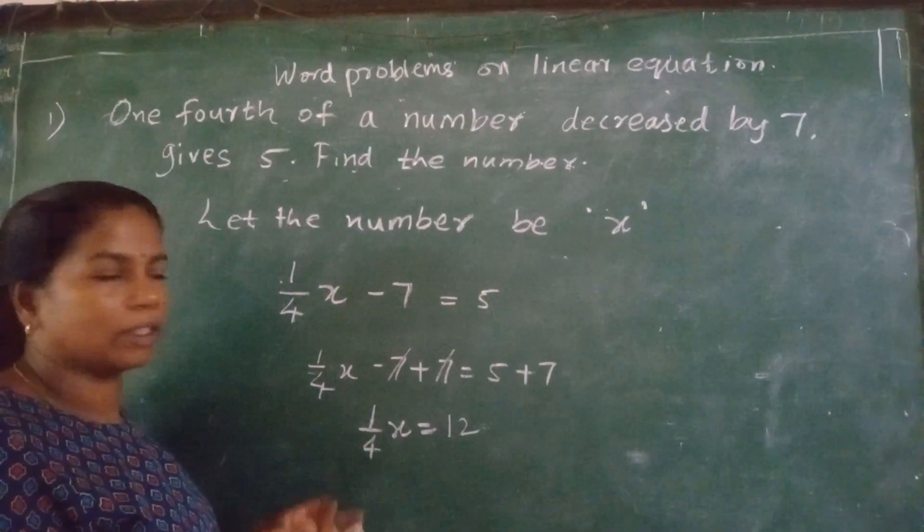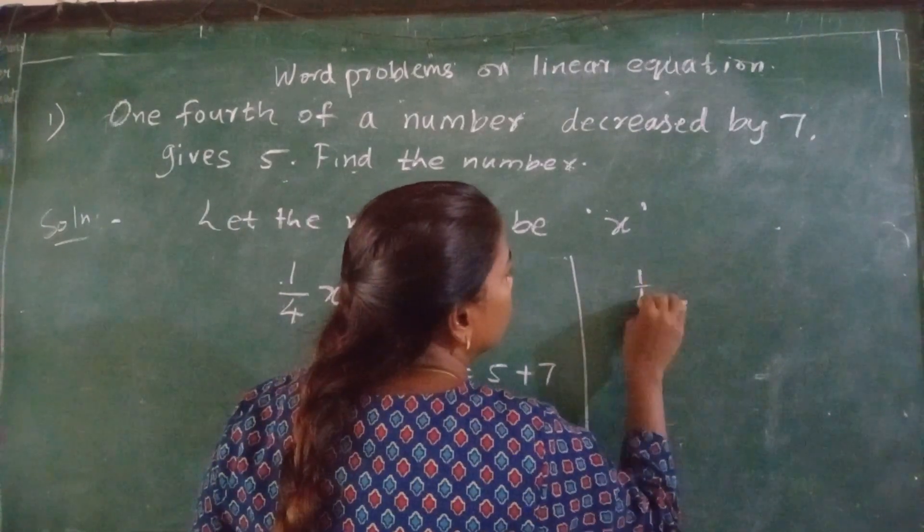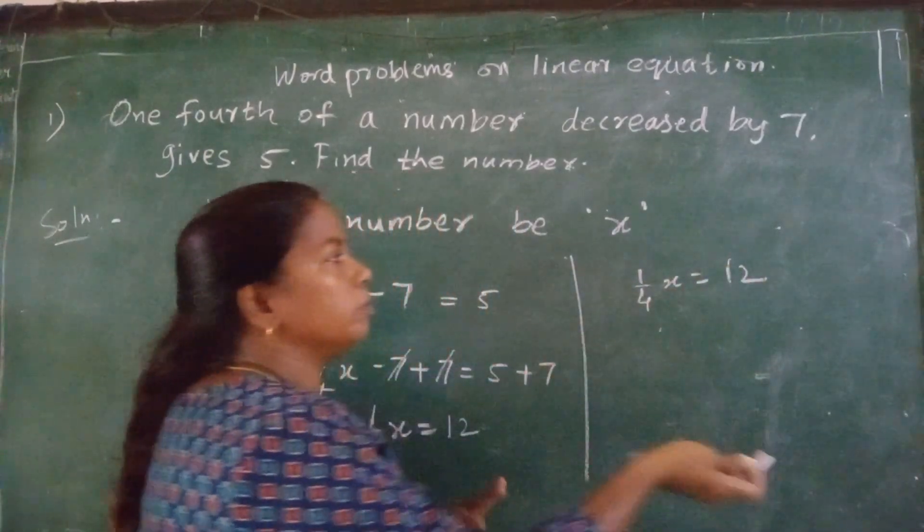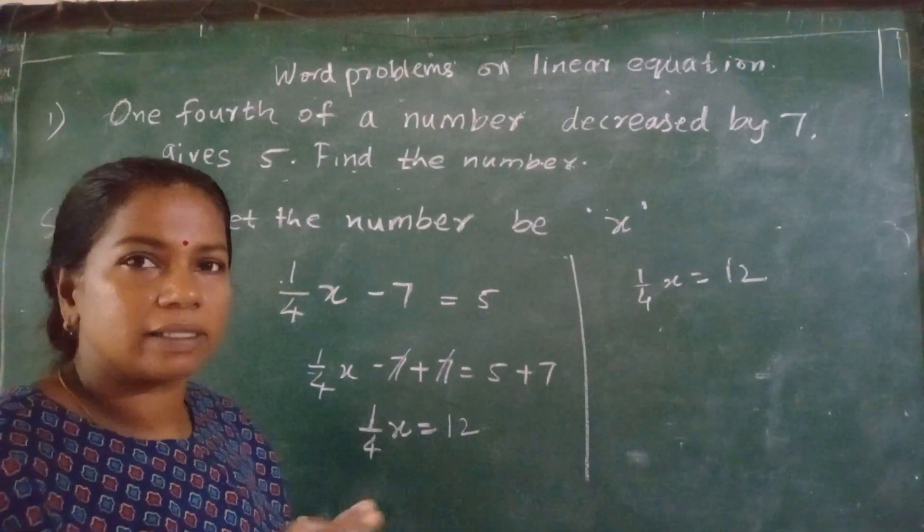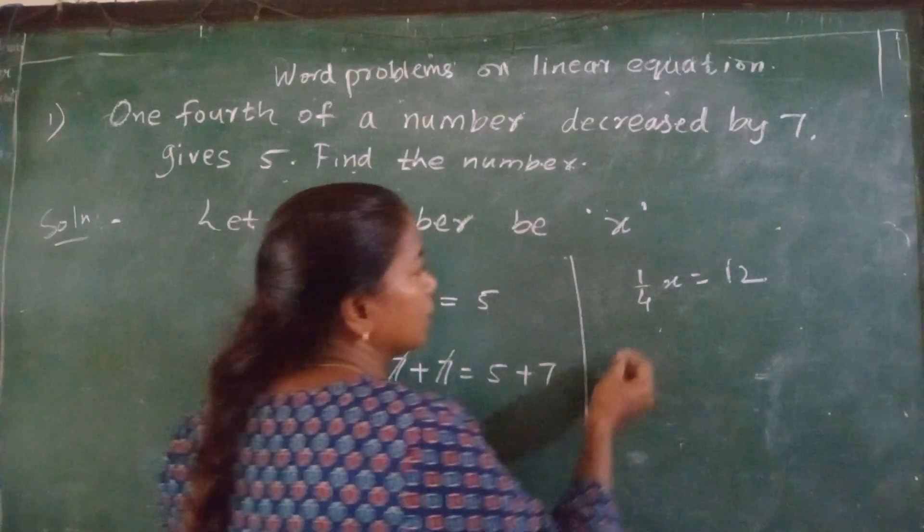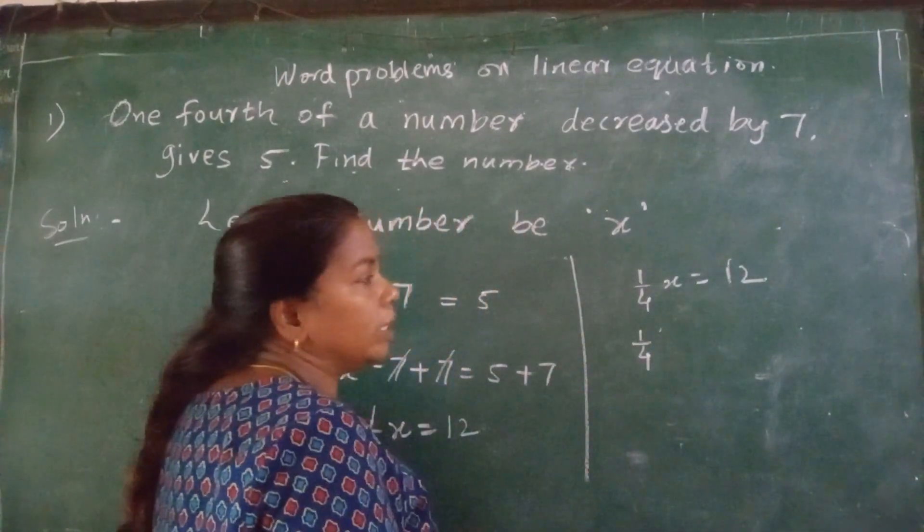Now one-fourth of X. What will you do? One-fourth of X is equal to 12. Now it is multiplied. Dividing one-fourth on both the sides. So that is one-fourth. Or you can do one thing.